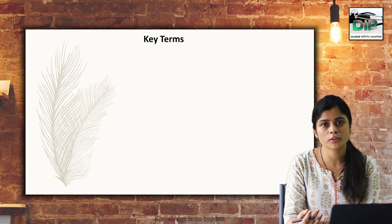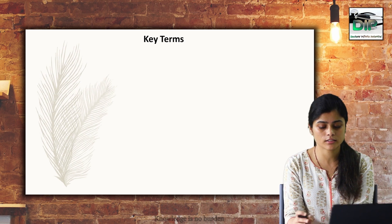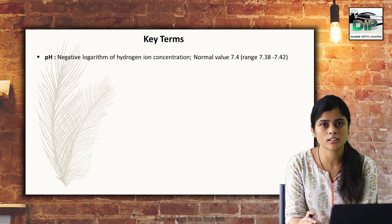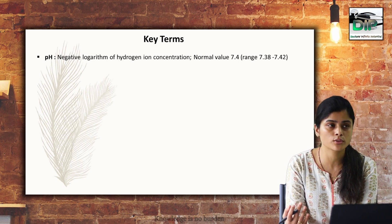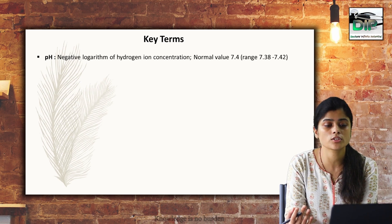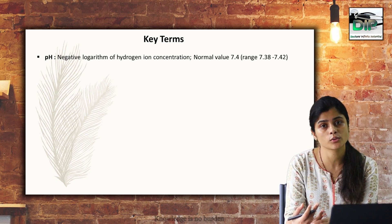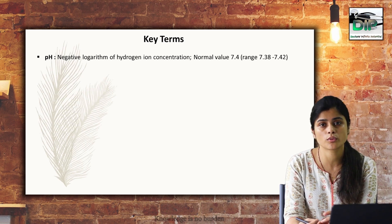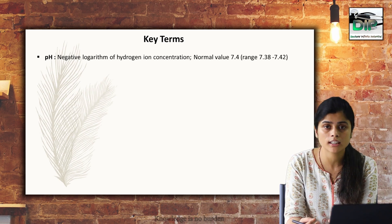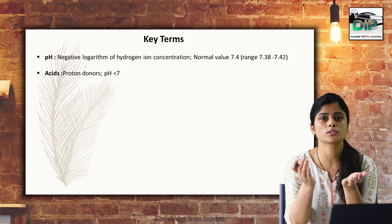Now we will cover the key terms used throughout today's class. The first term is pH. pH is the negative logarithm of hydrogen ion concentration — that is, how much is the hydrogen ion concentration. Higher the hydrogen ion concentration, the pH will be lower; lower the hydrogen ion concentration, the pH will be higher. Our body pH is in the range of 7.35 to 7.45, approximately 7.4.